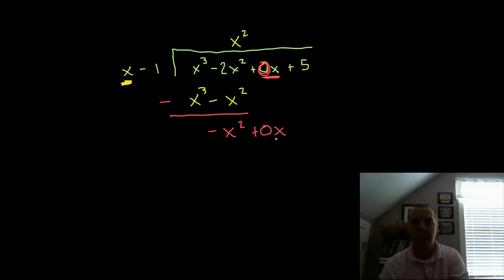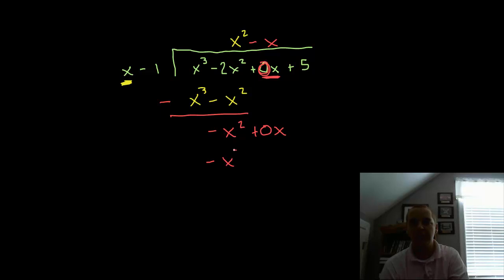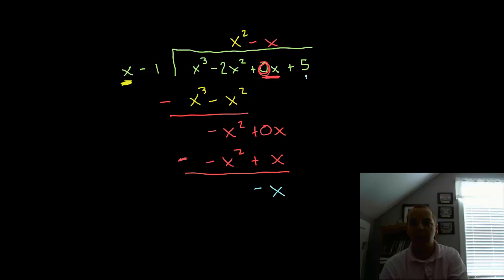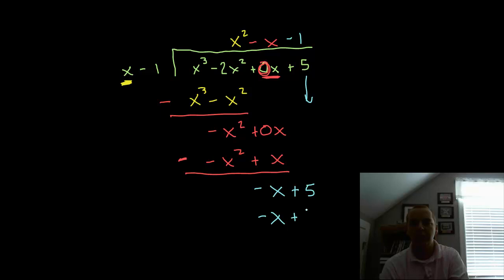We ask: what times x gives you negative x squared? The answer is negative x. So negative x times x is minus x squared, and negative x times negative 1 is plus x. Draw a line and subtract. Be careful with signs: that gives zero, and zero minus x gives minus x. Bring down that 5. Then, what times x gives you negative x? Obviously negative 1. Negative 1 times the divisor gives negative x plus 1. Subtract and you get a remainder of 4.